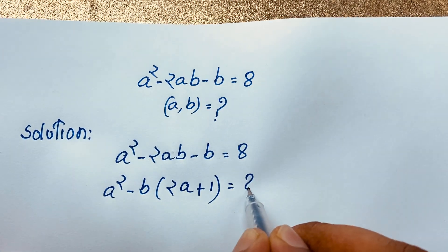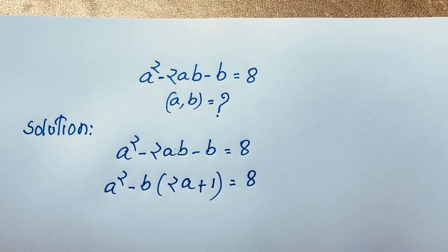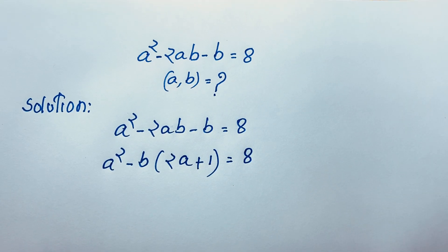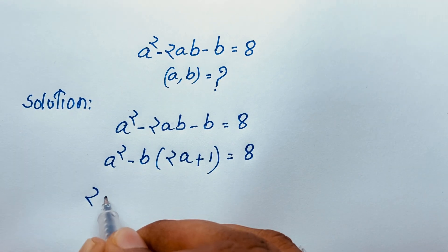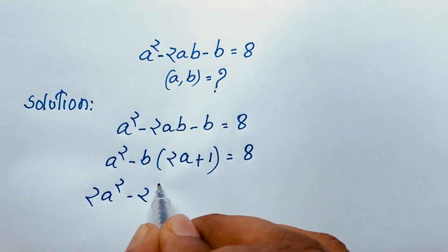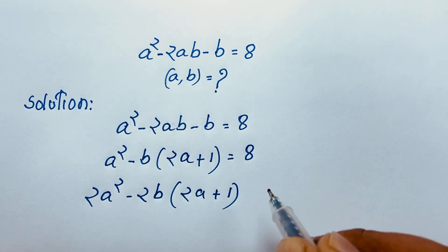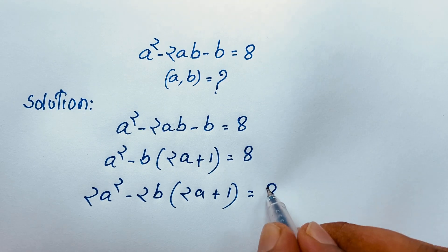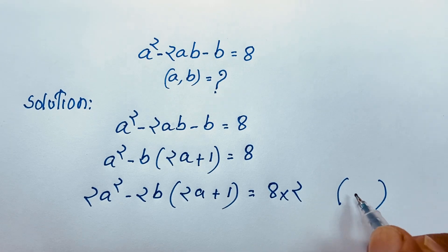This is equal to 8. Now I multiply both sides by 2, so it will be 2a² minus 2b times (2a + 1), and 8 times 2 gives 16. I multiply both sides by 2.